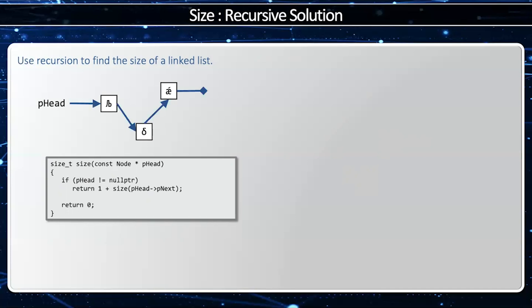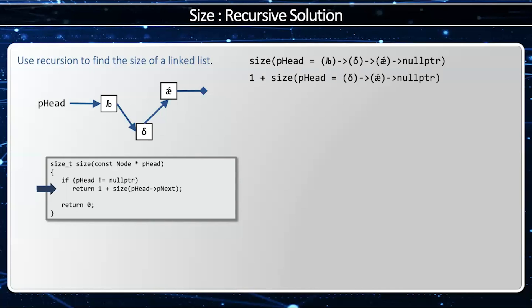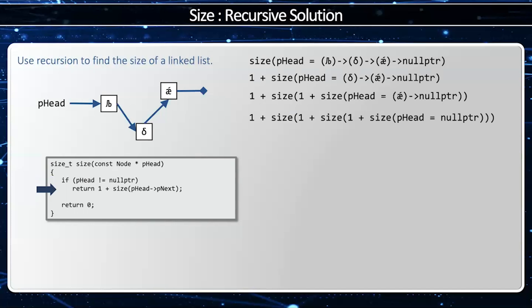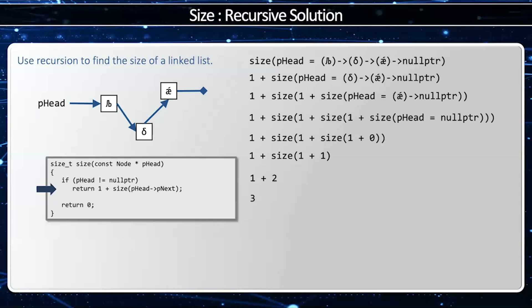Let's take a look at the same elements as before. I'm going to start: if p head is not equal to null pointer, that means the size is p head, which refers to one, two, three elements and the null pointer. Since that's not the null pointer, I return one plus size of p head arrow p next, which is the same as one plus size of — and now I'm pointing to the next element in the list. Is that the null pointer? It is not. So it becomes one plus one plus size, and then with one element remaining I call myself again. Since it's not the null pointer, that's one more, so it's one plus one plus one plus. Then p head equals null pointer, so I return zero. One plus zero is one, one plus one is two, and two plus one is three. I get the same answer using a recursive solution as I do using the iterative solution.